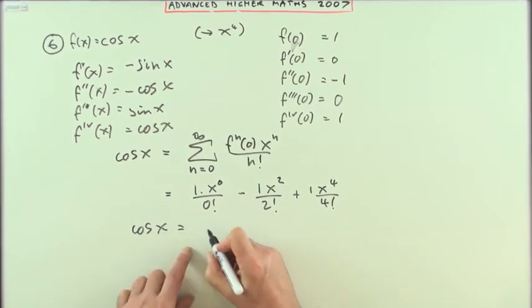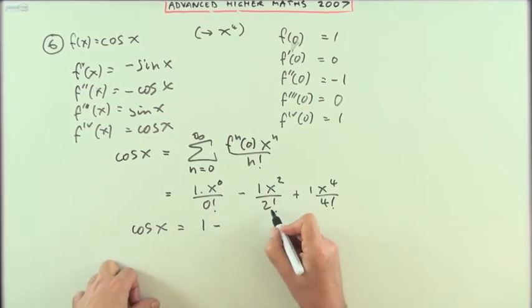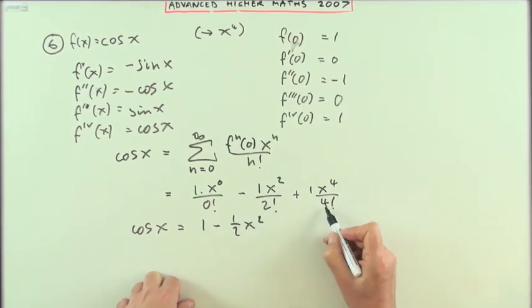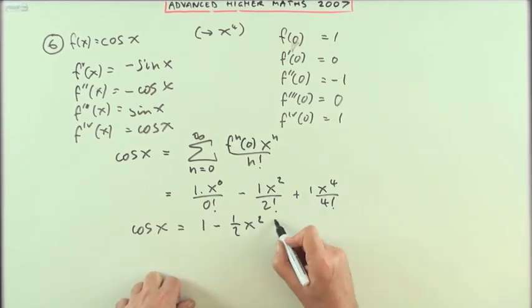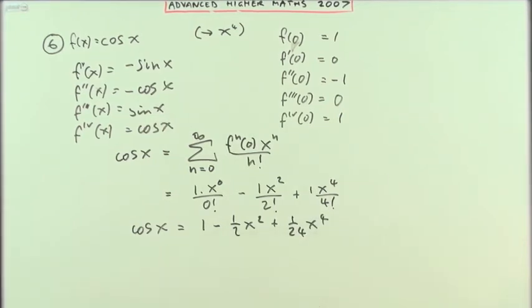So I can write out cos x equals 1, because anything to the 0 is 1 and 0 factorial is defined to be 1, minus 2 factorial is just 2, minus a half of x squared. 4 factorial is 24, plus a 24th of x to the 4. Which you knew anyway, those are one of the ones that you should learn: e to the x, sine x, cos x.